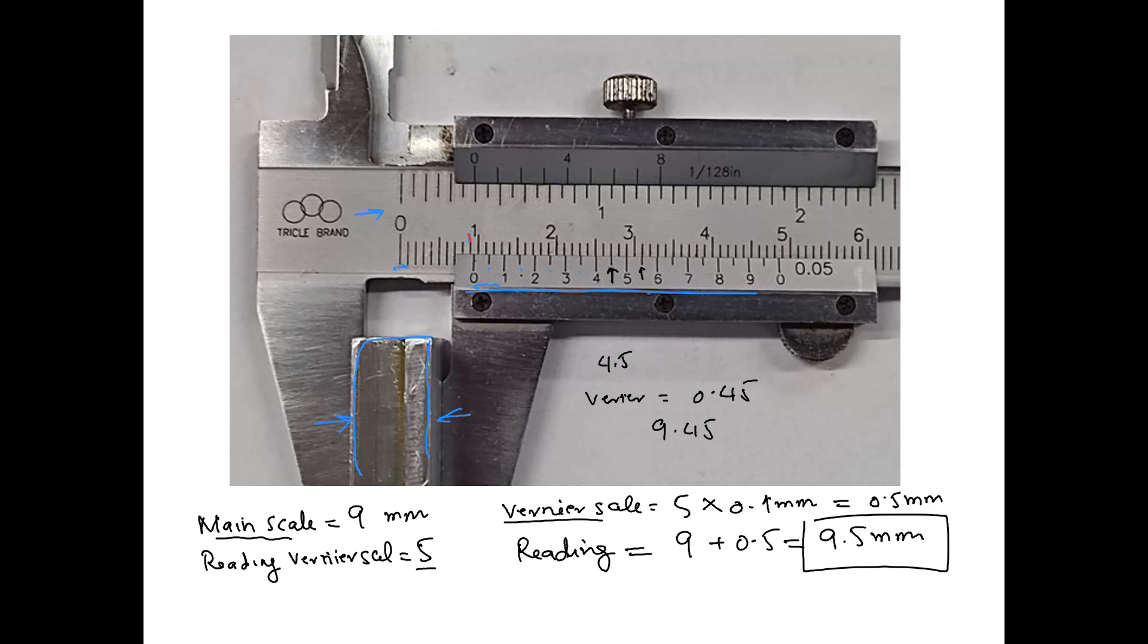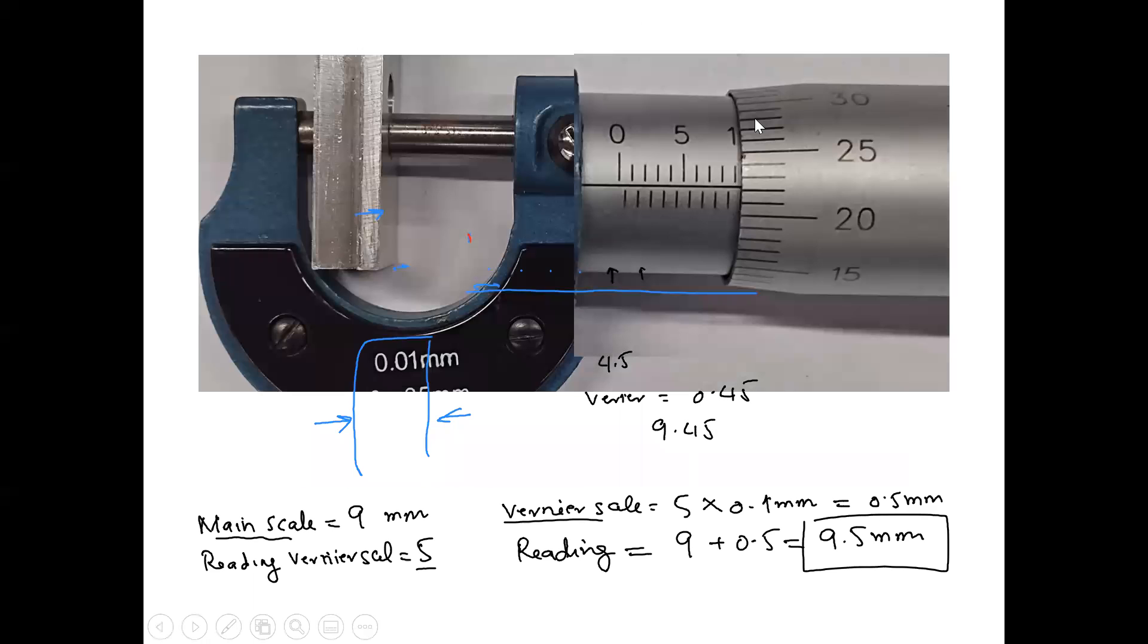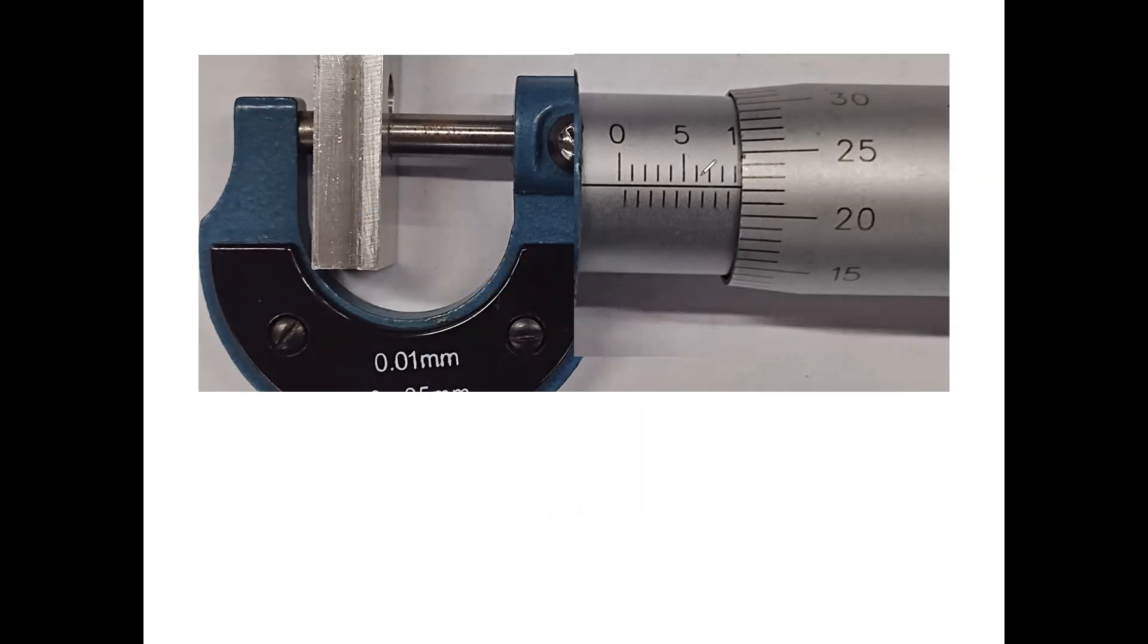Now let's go to the micrometer screw gauge. In this case, you can see again that you have the same object, now compressed between the two jaws of the micrometer screw gauge.